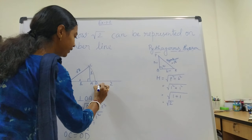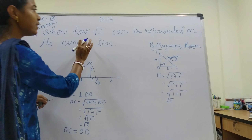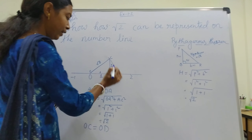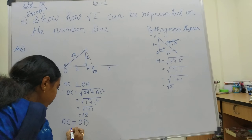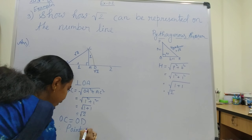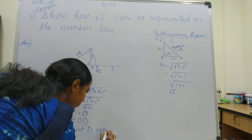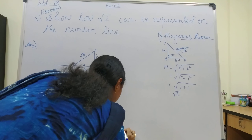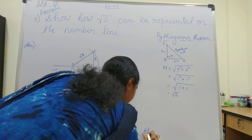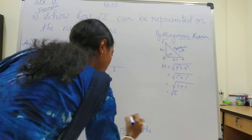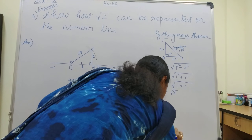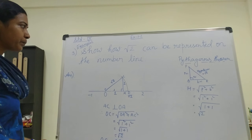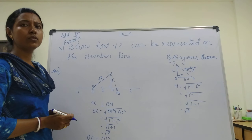Therefore point D indicates root 2. We have got root 2 on the number line. The point D expresses root 2 on the number line.